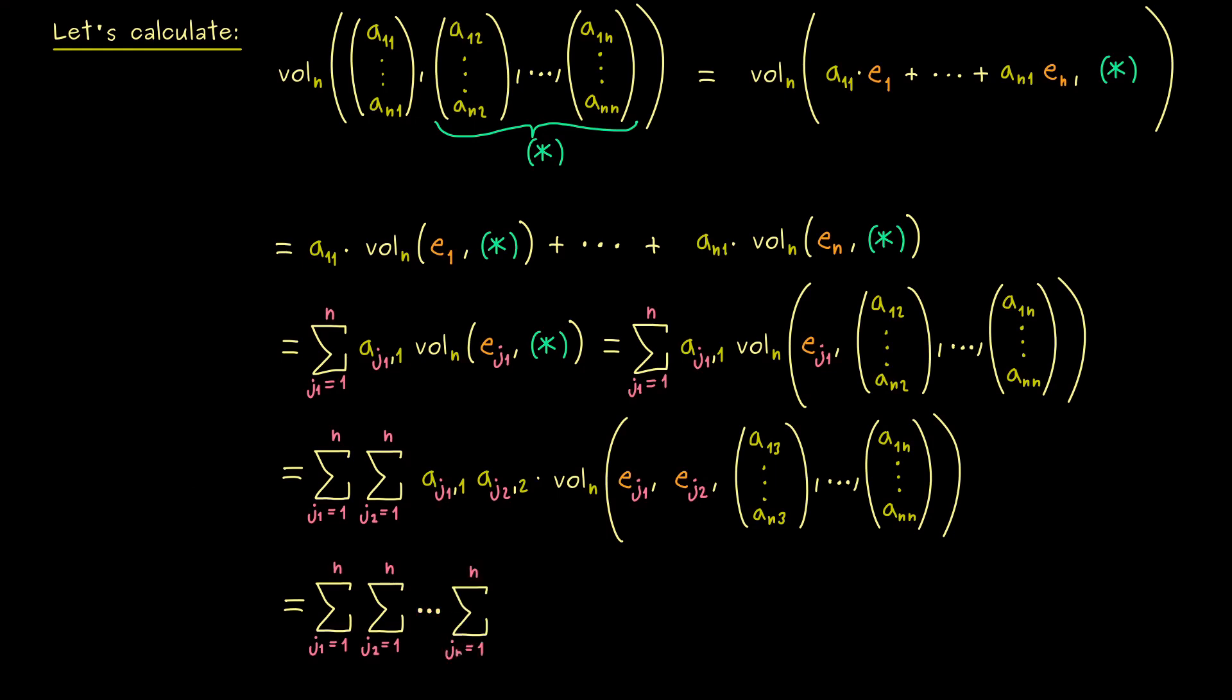In other words, in the end we will have exactly n sums in front. And the last index will simply be j_n. And then we also know what we have as the vectors because we simply go through all of them. And we still see that the index for j corresponds with the second index of a. And lastly, inside the volume form we just find the canonical unit vectors.